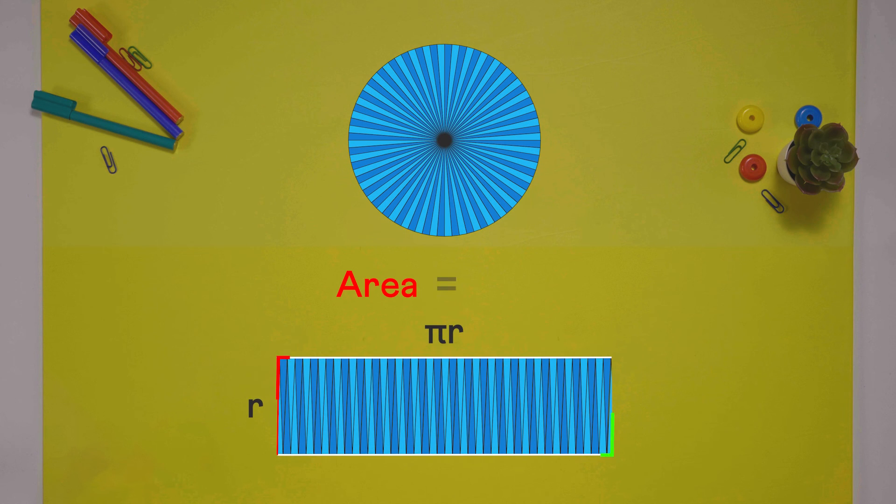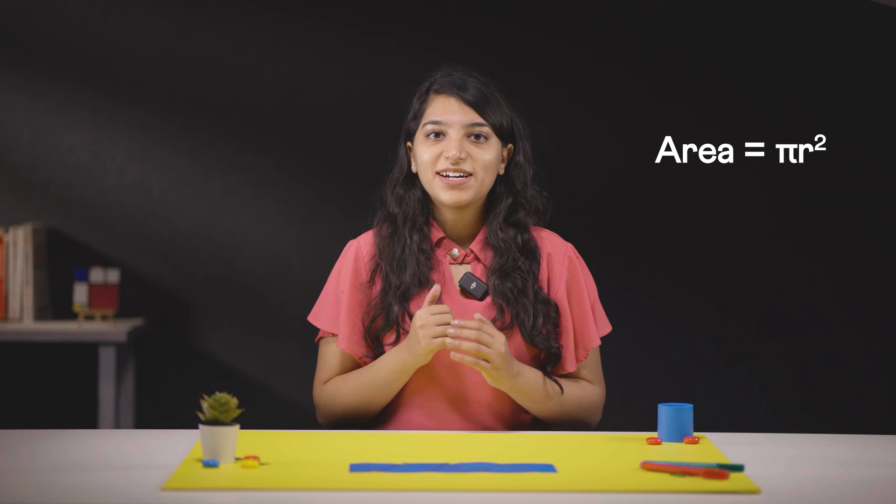And so, the area of this rectangle is pi r times r, that is pi r squared, which is also the circle's area, the same as what we found earlier.